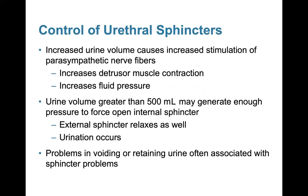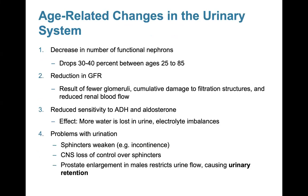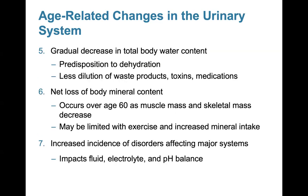Age-related changes in the urinary system include a decrease in the number of functional nephrons — dropping 30 to 40 percent between ages 25 and 85 — and a reduction in GFR due to fewer glomeruli, cumulative damage to filtration structures, and reduced renal blood flow. There is also reduced sensitivity to ADH and aldosterone, problems with urination, a gradual decrease in total body water content increasing predisposition to dehydration, a net loss of body mineral content, and increased incidence of disorders affecting fluid, electrolyte, and pH balances.